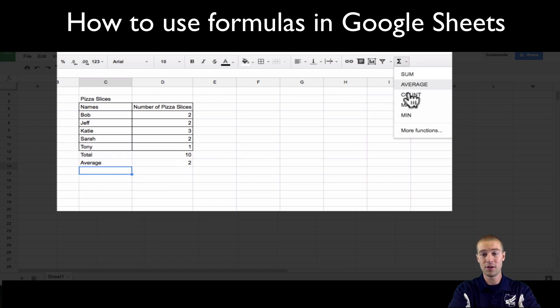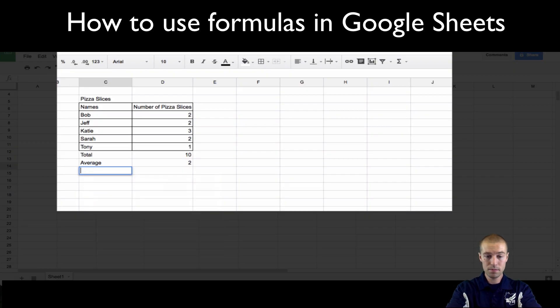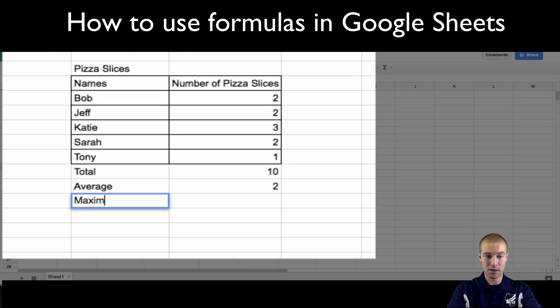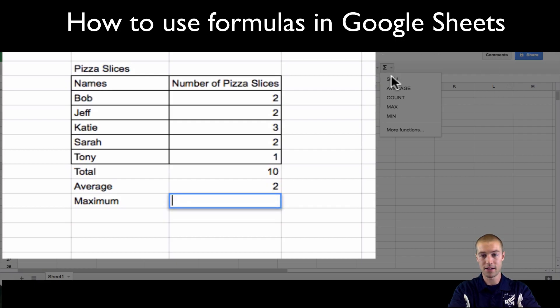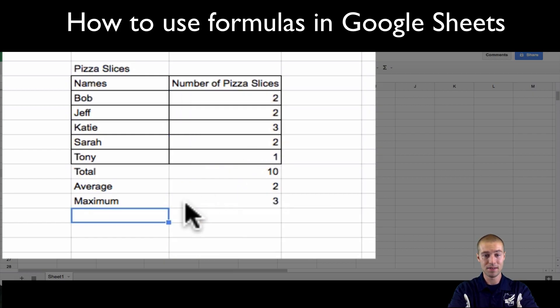Another cool one we can do is max. So what's the max amount of pizza slices that someone ate? So here we can write maximum, and then we can do equals, or we can just click it right here, click max, and then we can highlight all the ones in the table again. So the maximum was three - that was Katie that had three slices.